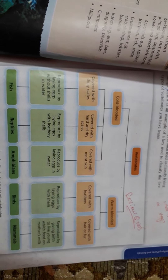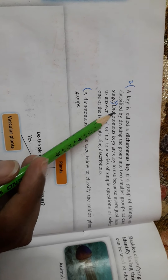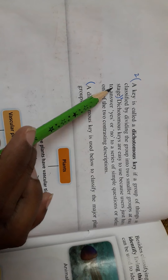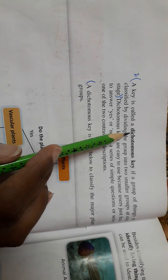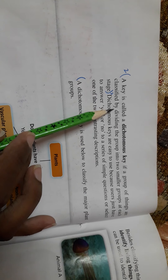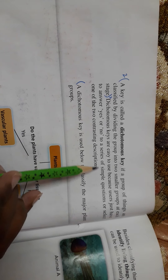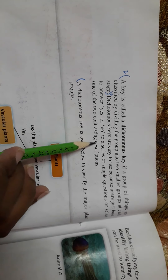This is the way to construct a key about different organisms, which is a very important tool in classification. The key is called a dichotomous key if a group of things is classified by dividing it into two smaller groups at each stage. 'Di' means two. The key is very easy to use because you just have to answer yes or no to a series of simple questions, or select one of two contrasting descriptions.